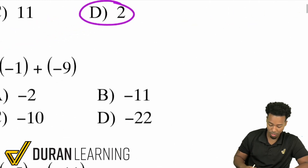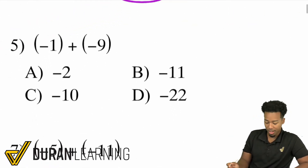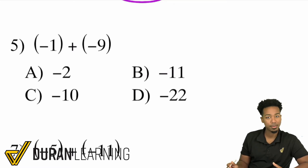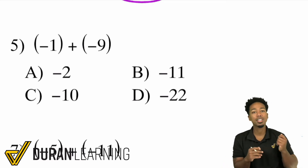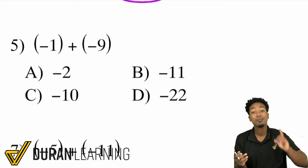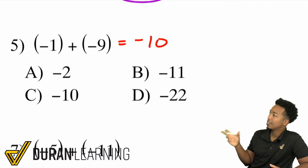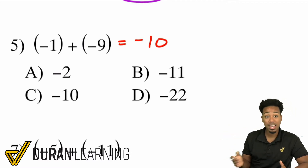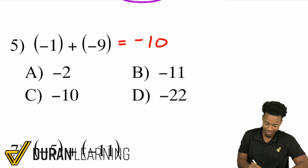Number 5: negative 1 plus negative 9. They're both already negative, and you have two negatives being added together, so you're getting more negative. 1 plus 9 is 10, but you're going to make it negative 10. In the same way that if you had two positives added together it would get more positive, two negatives added get more negative.